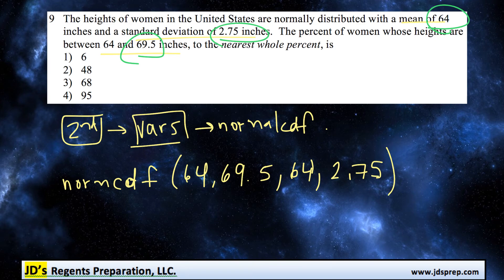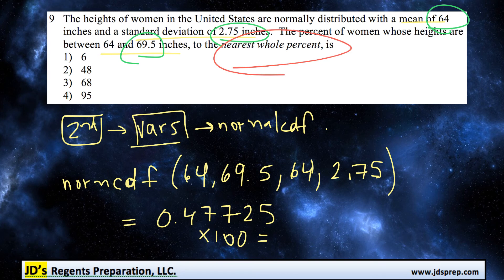Press enter and you get an output of 0.47725. If you want to turn that into a percentage we would multiply it by 100, and we need to round it to the nearest whole percent which becomes a round value of 48. So that's going to be number two.